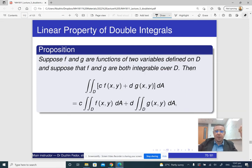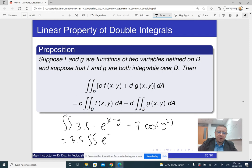The second property is that if we have a function that is a linear combination of two functions, then the integral is a linear combination of two integrals. If you want to integrate something like 3.5 times e to the x minus y minus 7 times cosine of y squared, then you can just take 3.5 times double integral of e to the x minus y minus 7 times double integral of just cosine of y squared.